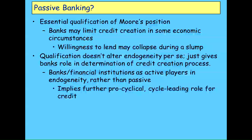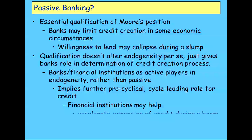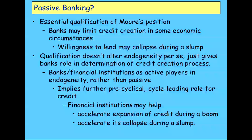What it implies is more cyclical behaviour: banks are likely to want to extend credit during a boom and restrict supply during a slump, which amplifies what the commercial sector itself does in the same circumstances. So banks can help accelerate the expansion of credit during a boom and accelerate its collapse during a slump — and we've certainly seen that in recent history.